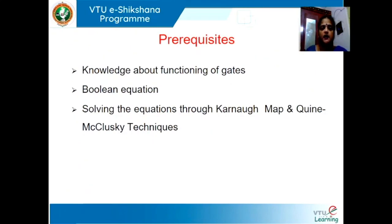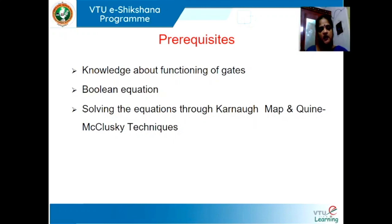The prerequisites for learning this particular module are: you are expected to have knowledge of the functioning of logic gates. You should have clear information and knowledge about Boolean equations, and you need to be well versed with them. You should be able to solve the equations using K-map and Quine-McCluskey method. These concepts have been learned by you in the previous module.